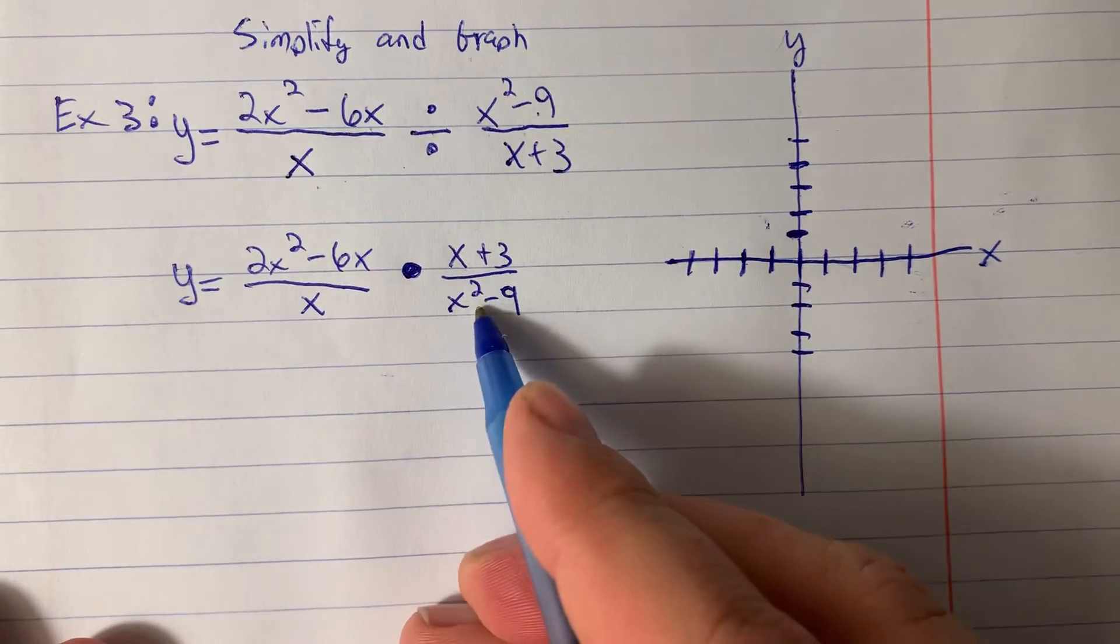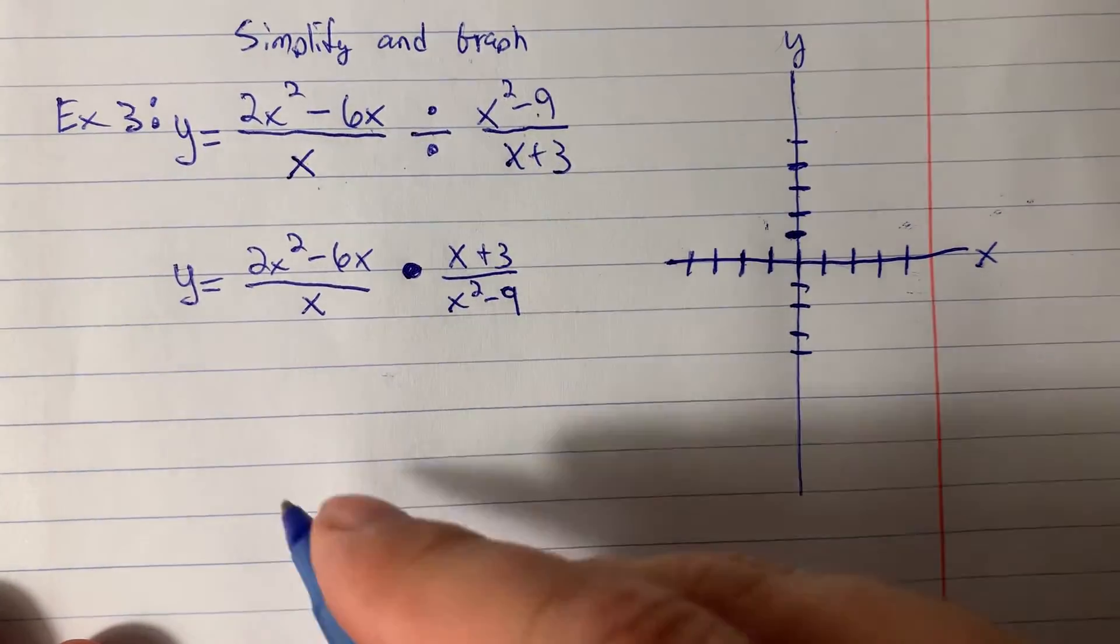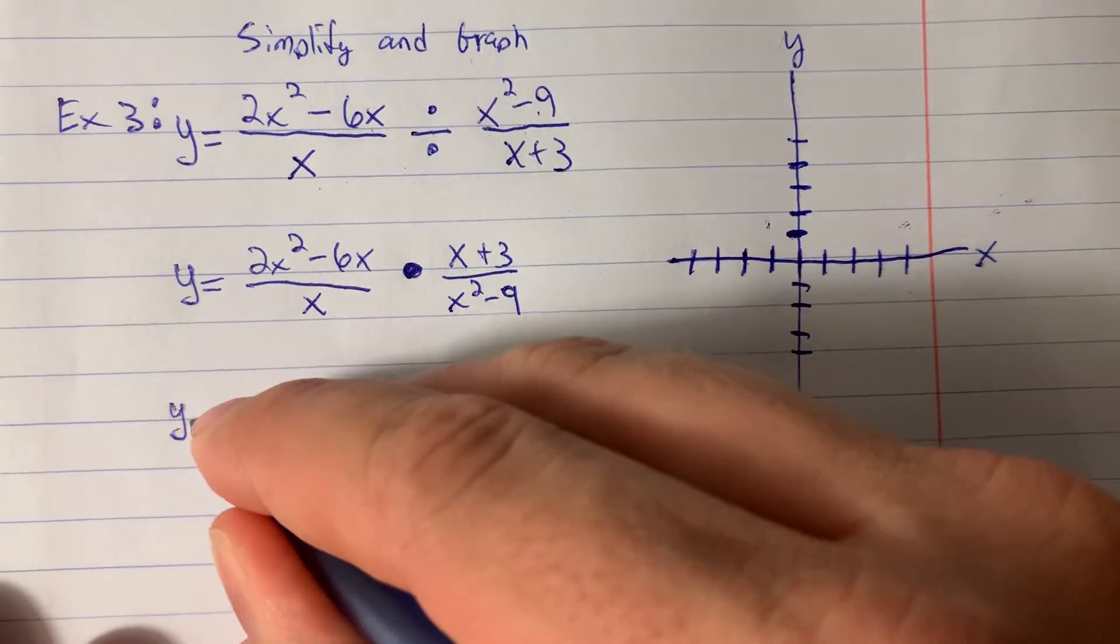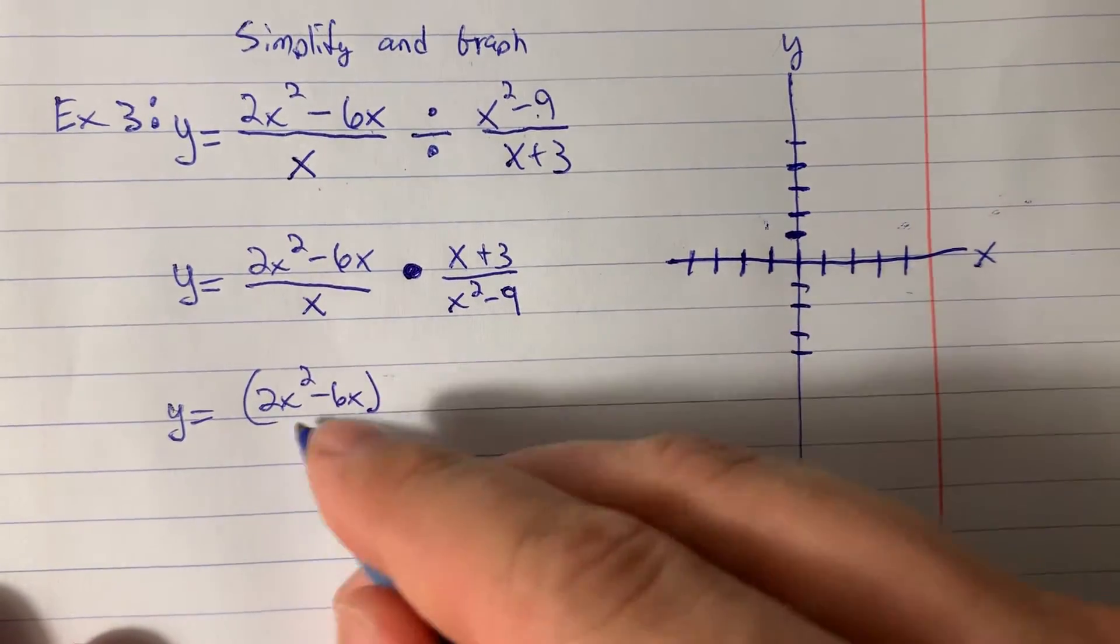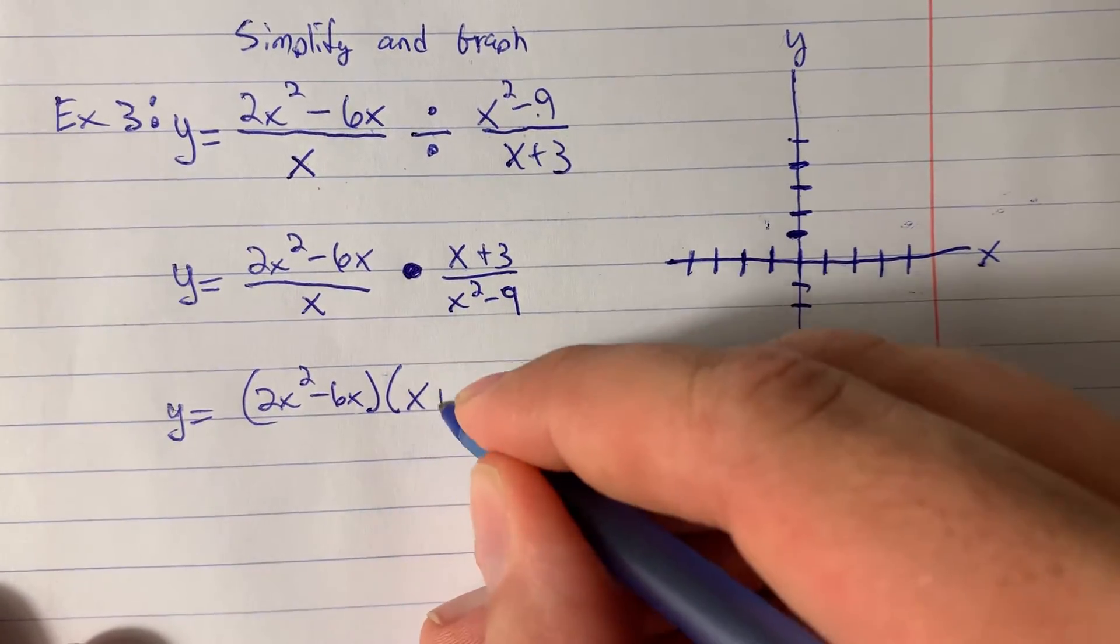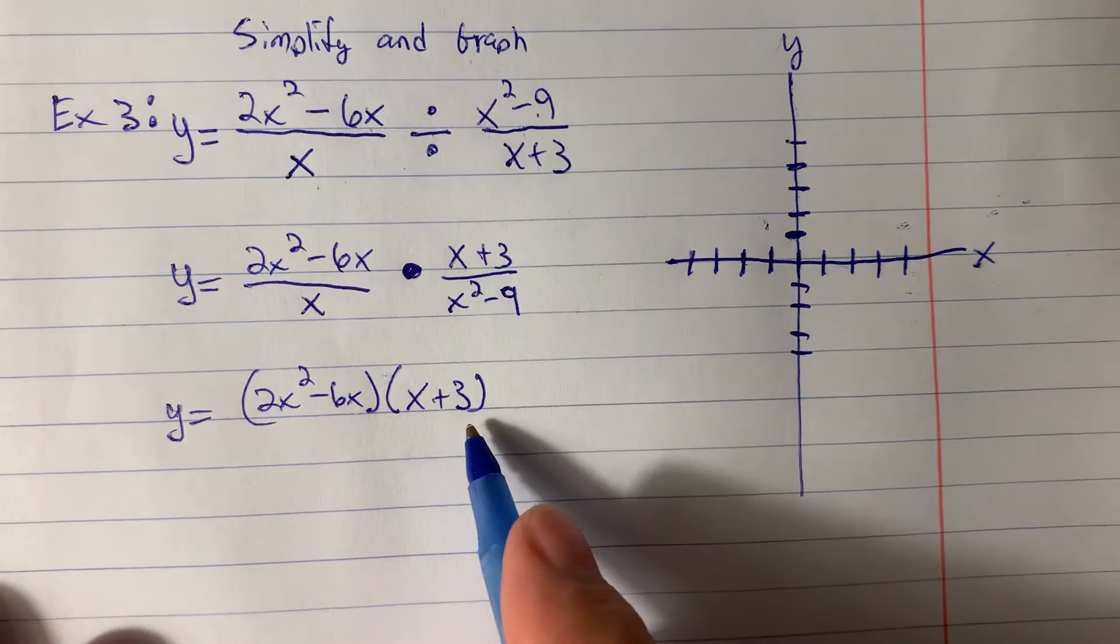And remember, for multiplying, we don't need a common denominator. We can just multiply straight across. So this is going to be y equals 2x squared minus 6x in parentheses, because it's a binomial, times x plus 3, which needs to be in parentheses because it's also a binomial.